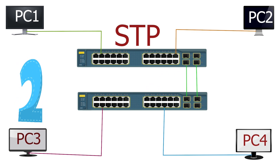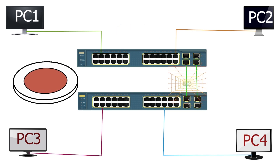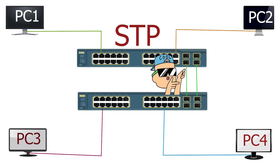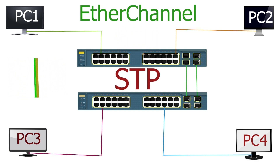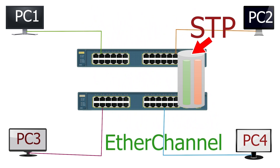STP virtually blocks all ports that cause loops. We have two solutions to this problem — we can disable STP or use EtherChannel. Disabling STP can cause loops, and a network never works with loops. The second solution allows us to create multiple links without disabling STP. An EtherChannel combines links into a single link. If we create two links between these switches and configure an EtherChannel, both will be visible as a single link to STP but will work as two links for switches.